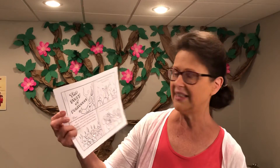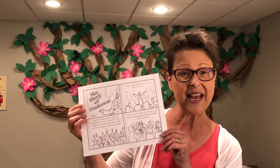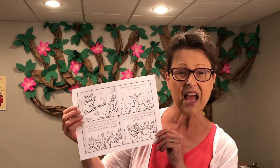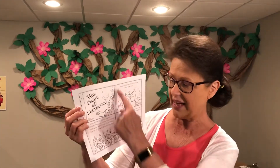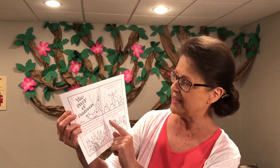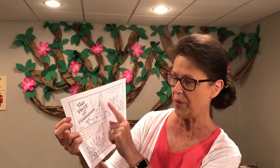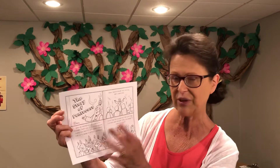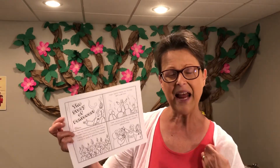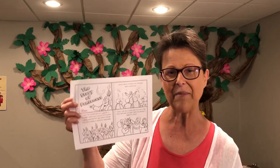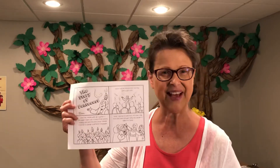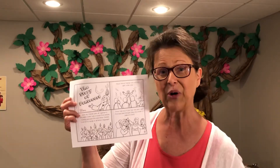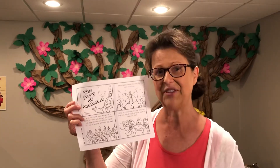I've got a couple other great activities for you this week. One of them is a little mini book about the Day of Pentecost that you can color, cut out — it has four pages, so you cut each page separately, put them in order, and it makes a little mini book about the Day of Pentecost and what happened on that day — that birthday we talked about.